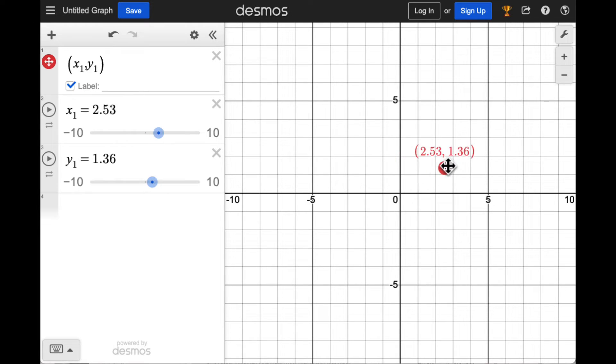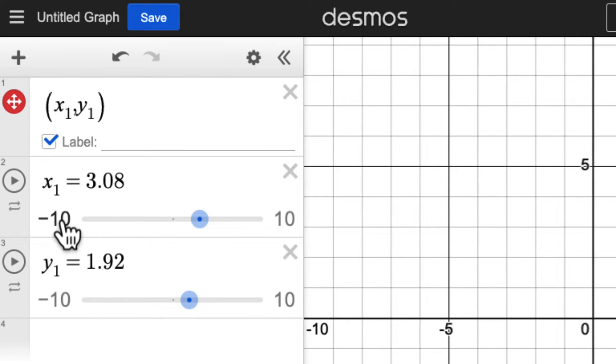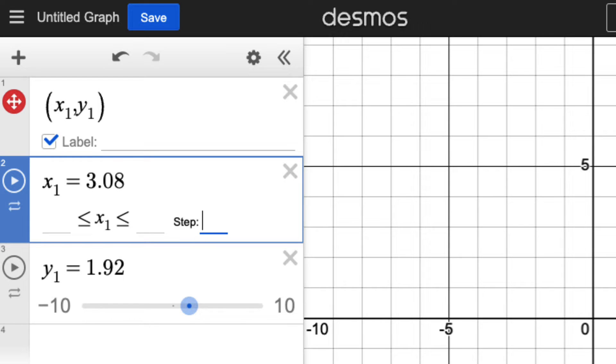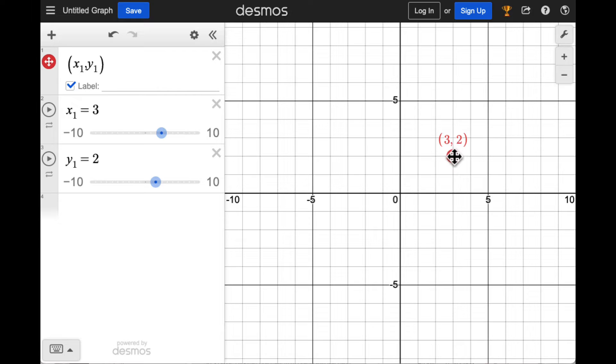Click and drag on the point to move it and see how the coordinates change. Change the sliders so that they show integer steps for the coordinates. Simply click on one of the numbers in the slider and set the step to 1. Do that for both x1 and y1. Click and drag on the point and you'll see how the point snaps to the grid in whole number amounts.